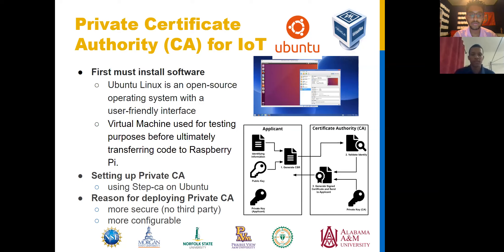Once the OS is installed, we can begin by setting up our private Certificate Authority. During this process, we made use of STEP-CA, which is an open source Certificate Authority used for creating public key infrastructures and other Certificate Authorities. The reason we are deploying our own private Certificate Authority is to make our devices more secure, as we no longer have to rely on third parties to obtain a certificate, and we also don't have to worry about web PKI threats such as hackers.